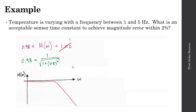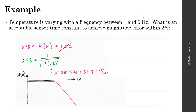Recalling the graphical description of the magnitude ratio: the maximum is 0 dB or 1 in a linear sense, and it falls off at minus 20 dB per decade when omega reaches 1 over tau. Since we have this roll-off at higher frequencies, if we need to achieve an error within 2%, we focus on the higher frequencies — in this case, 5 Hz — to define the error constraint.